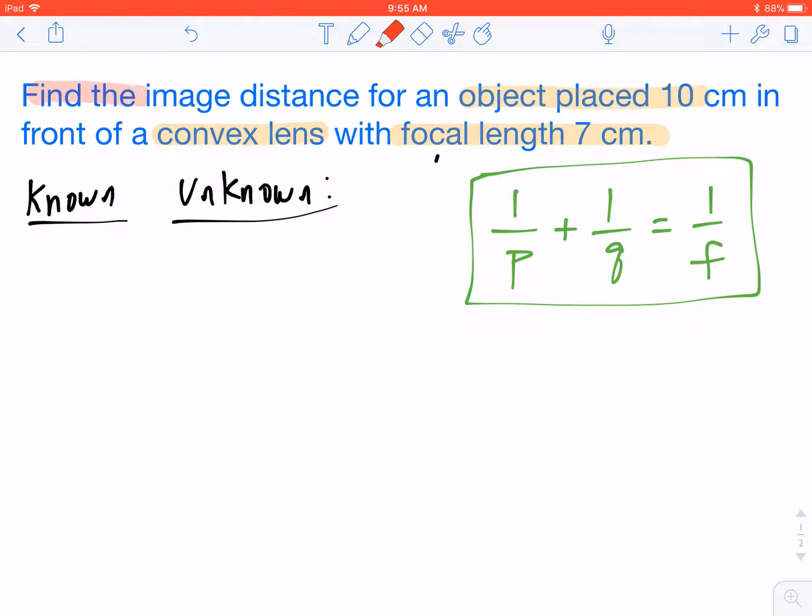What the question is asking is to find the image distance. So if we take a look at our equation over here in green, 1 over p plus 1 over q equals 1 over f, we know that our lowercase p stands for our object distance. So in this case, 10 centimeters. We also know our focal length, which is 7 centimeters. So that's our lowercase f. And we want to find our image distance. So what we don't know is lowercase q.